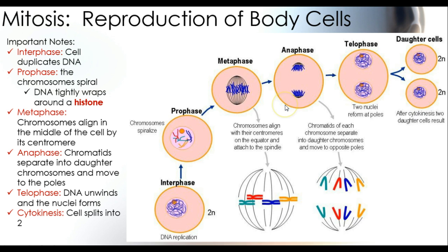Anaphase is where the chromosomes split apart and are pulled by the spindle fibers towards the poles of the cell — poles just describing north and south. Telophase is where the DNA unwinds and the nuclei re-form. Then cytokinesis is when the two cells split apart to make their own cells — the cell splits into two cells.